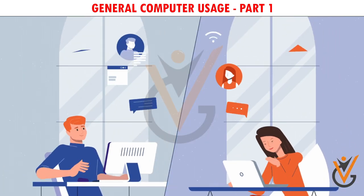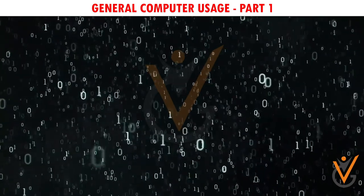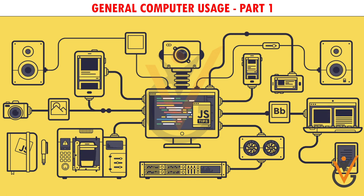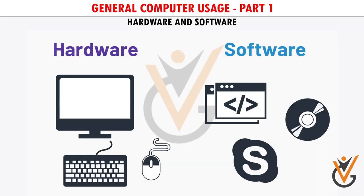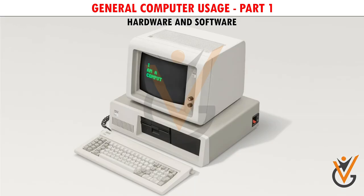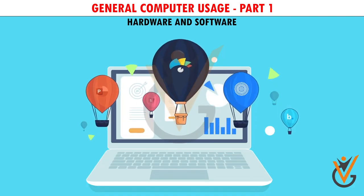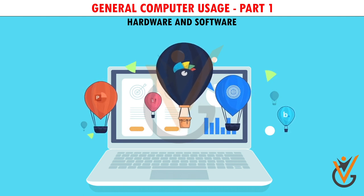A computer is an electronic device that manipulates information or data. The computer sees data as ones and zeros, but it knows how to combine them into much more complex things such as a photo, movie, website, game, and much more. Computers use a combination of hardware and software. Hardware is any physical part of the computer, which includes the internal components and external parts like the monitor and keyboard. Software is any set of instructions that tells the hardware what to do, such as a web browser, media player, or word processor.